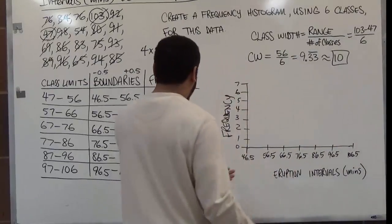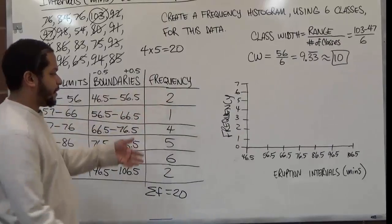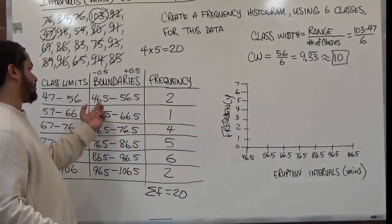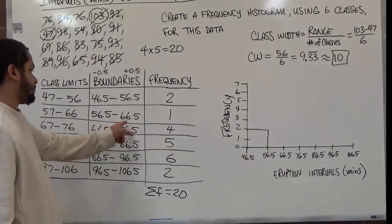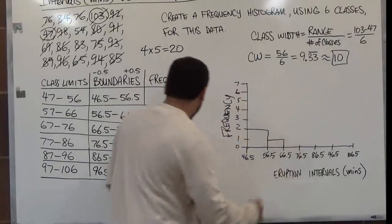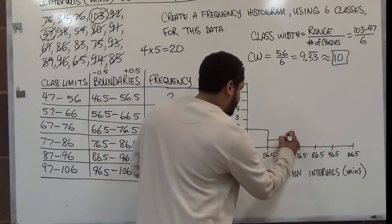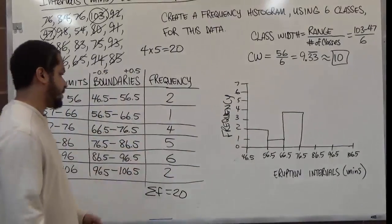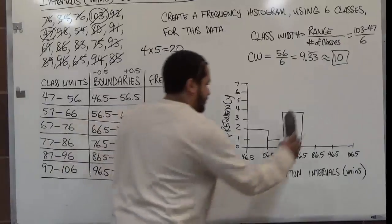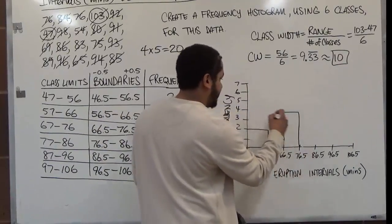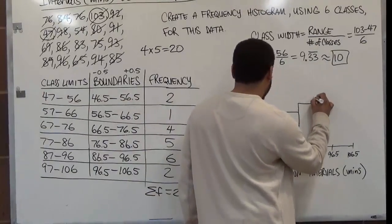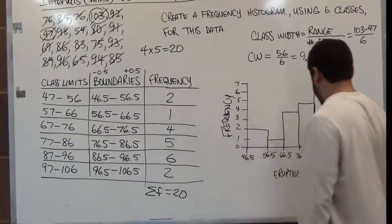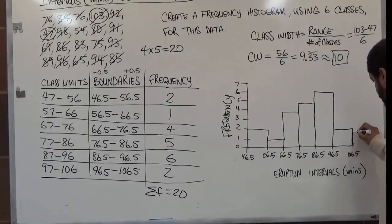Now we create the bar graph for the histogram, using frequency as the height and each class boundary as the width. The first class from forty-six point five to fifty-six point five has frequency two. The next has frequency one. The following class has frequency four, then five, then six, and the final class goes up to two. That's our frequency histogram.